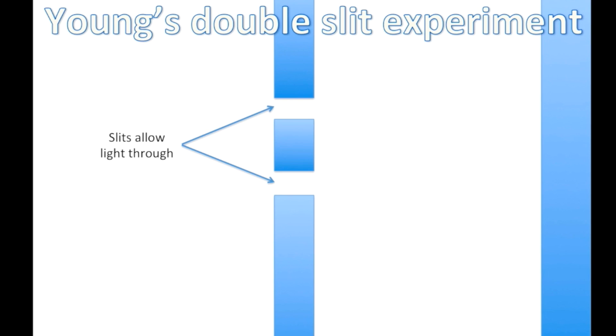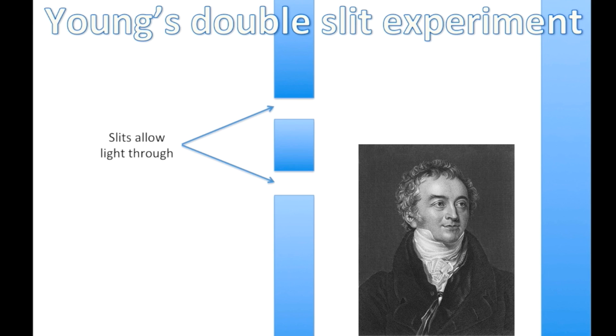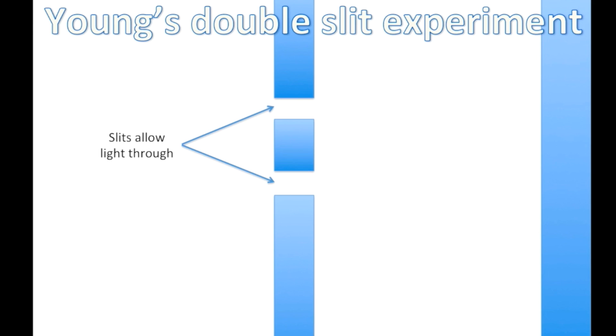Now that we know about waves and particles, we can talk about Young's Double Slit Experiment. In Young's Double Slit Experiment, there is a wall with two slits cut through it, and behind that there is a background. As you can see, when particles are shot at it, they will only impact directly behind where the slits are.